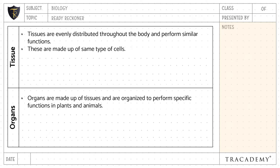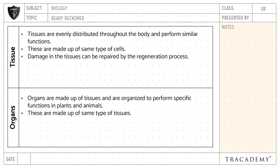Tissues are made up of the same type of cells, whereas organs are made up of the same type of tissues. Damage in the tissue can be repaired by the regeneration process, and repairing of tissue repairs the organ as well.